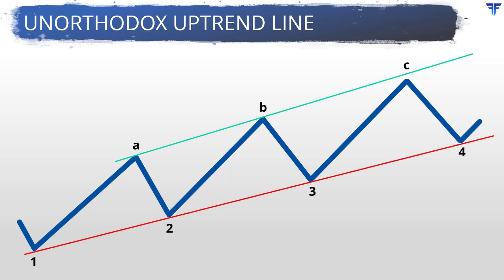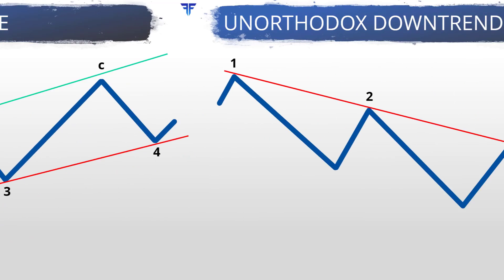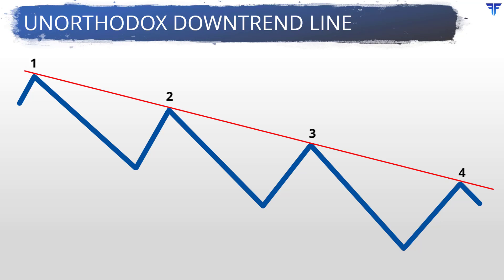Because the rising red trendline connects rising supports, it is also known as a rising support line. Similarly, the rising green line is also known as a rising resistance line. In a similar way, a traditional downtrend line is drawn connecting falling resistances. One could also connect two falling supports and project it into the future to find where the price decline could find support. Such a falling support line informs a trader of a good level to consider booking profits on existing short positions. Contrarian traders could also establish long positions in anticipation that the price could rise back towards the falling resistance line.